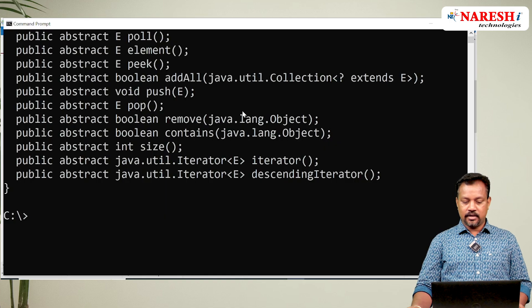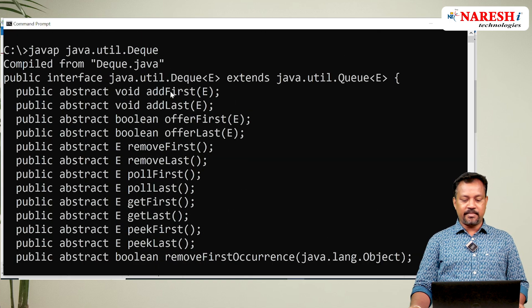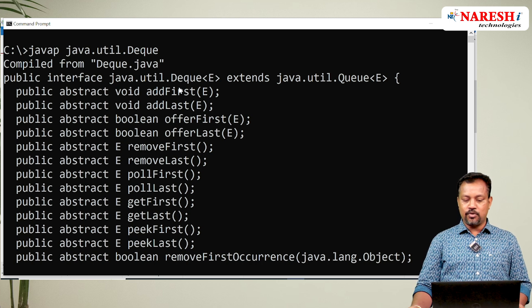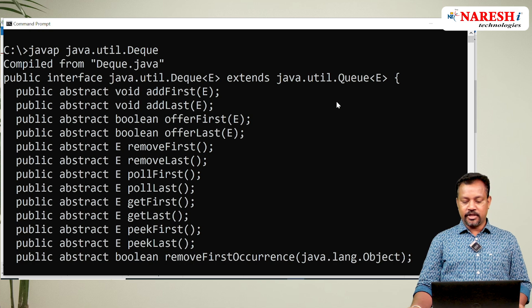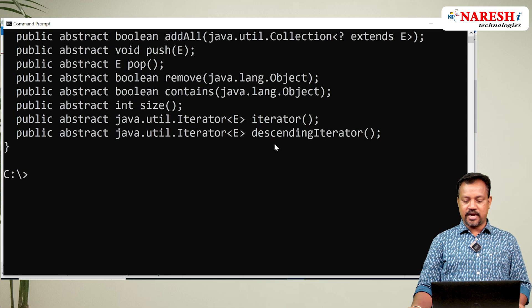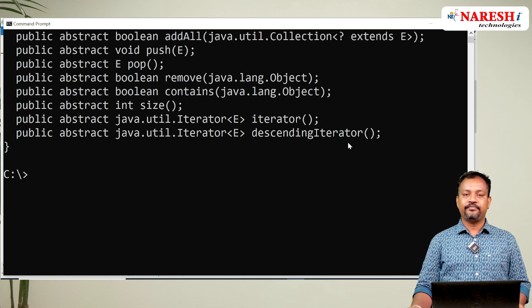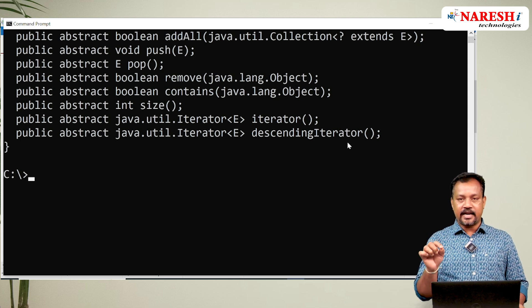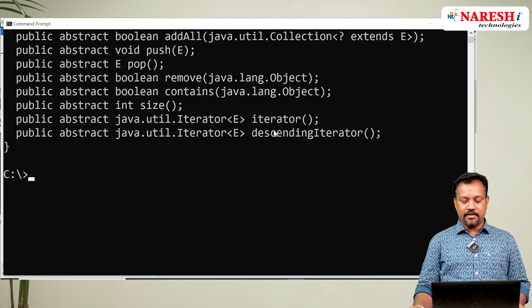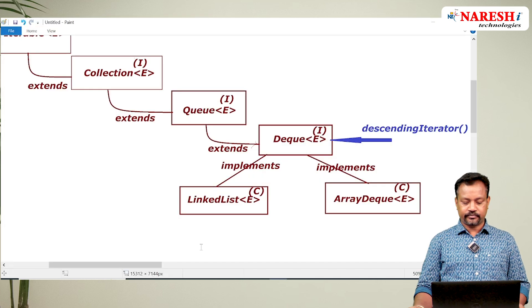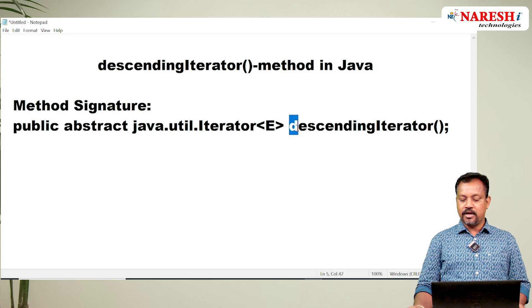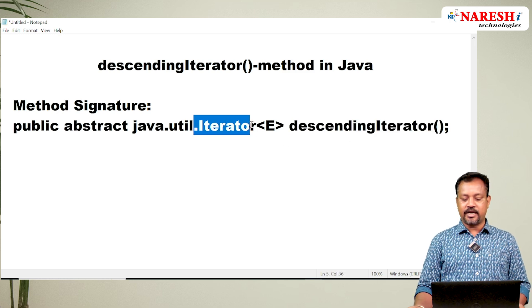Let us see the methods of Deque. If you see the methods of Deque here, interface java.util.Deque extends from java.util.Queue. This Deque is providing one method known as descending iterator. In today's video let us have discussion on this descending iterator. If you see the method signature, descending iterator method return type is Iterator.